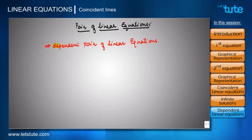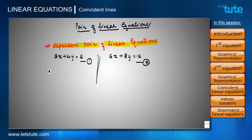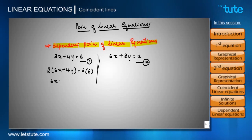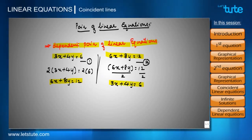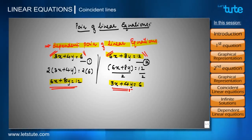Let's understand why they are called dependent pair of linear equations. Consider equation one: 3x plus 4y equals 6. If we multiply the whole equation by 2 on both sides, we get 6x plus 8y equals 12 — which is exactly equation two. Now consider equation two: 6x plus 8y equals 12. If we divide both sides by 2, we get 3x plus 4y equals 6 — which is equation one. This shows that if equation one is not there, we can't get equation two, and vice versa. Therefore, the two equations are dependent on each other and are called a dependent pair of linear equations.